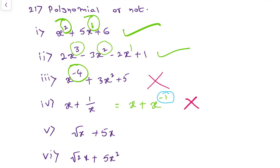Next: root x plus 5x. We can write root x as x power 1 by 2, plus 5x as it is. So here, power is 1 by 2. And we know that 1 by 2 is not a whole number. So this is also not a polynomial.